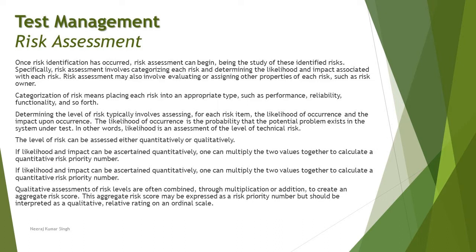What exactly does level of risk consist of? A level of risk is a combination of two different parameters. Number one is the likelihood, and the second is the impact. Impact stands for the severity or criticality of the risk, whereas likelihood stands for the probability of that event happening.